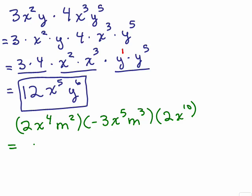So we've got 2 times negative 3 times 2. So you can see that I'm grouping those. I'm putting X to the fourth and X to the fifth and the X to the tenth together. And the M squared times the M cubed.